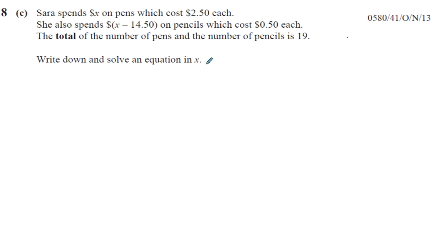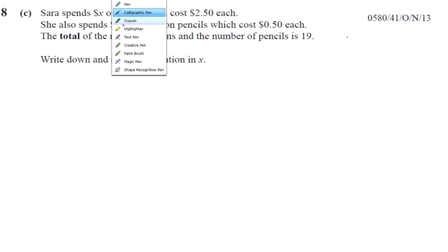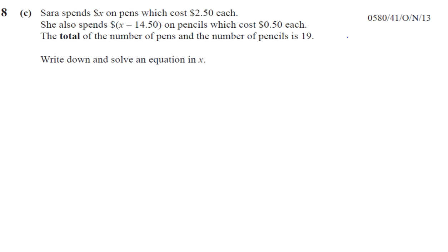So we've got to find basically what X is, which is the amount that she spends on pens. When they give you a question like this, you have to try to find a way to link all the different bits of information together. The total number of pens and pencils is 19, so that's what we're going to use to link this question together. They've told us how much she spent on pens and how much the pens cost each, and how much she spent on pencils and how much they cost each. With that we can work out the number of pens.